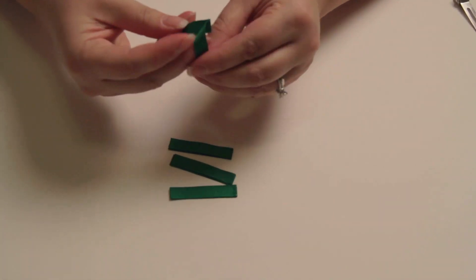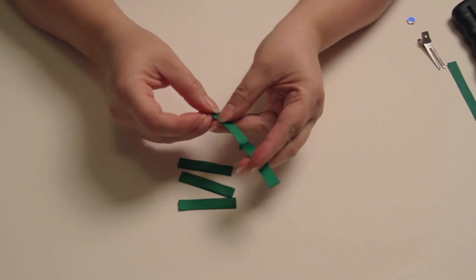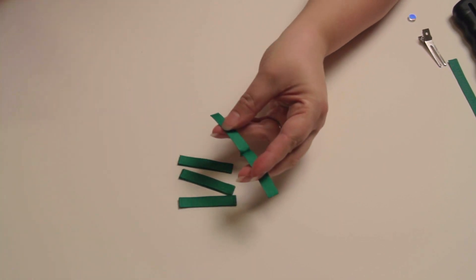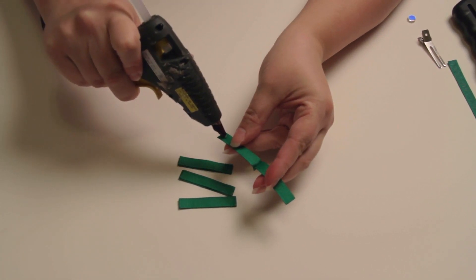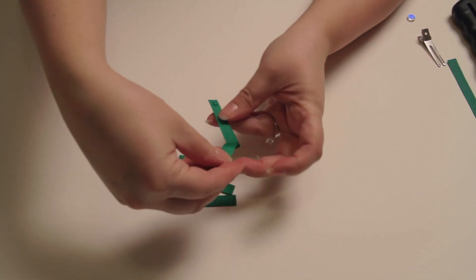Take your pieces and open them up like this. And on either side it doesn't matter. You're going to put a dot of glue. Again it doesn't take much.